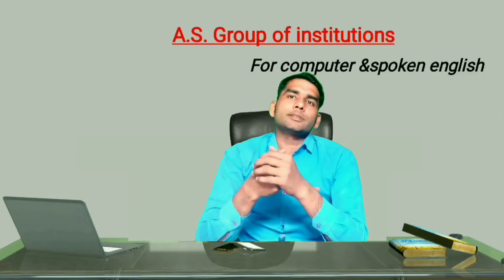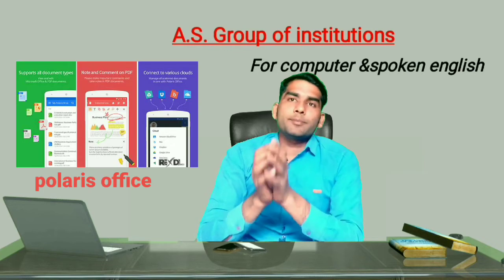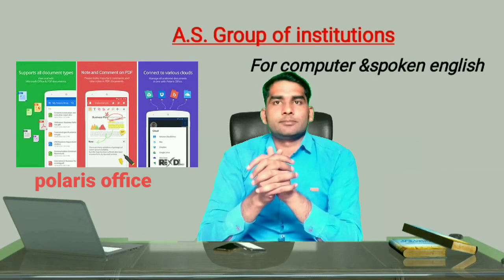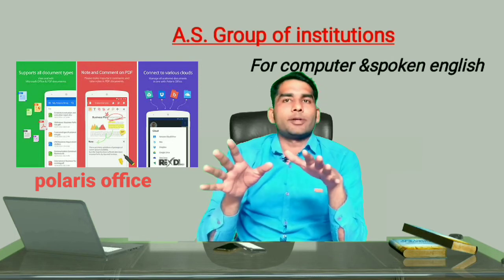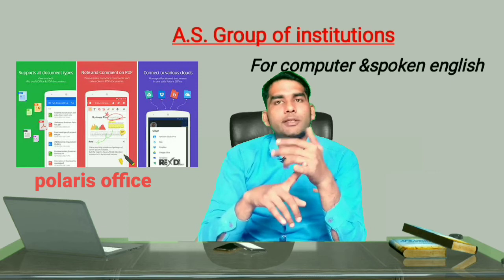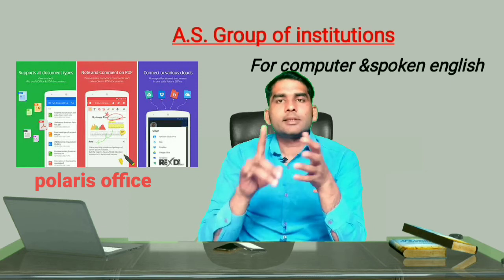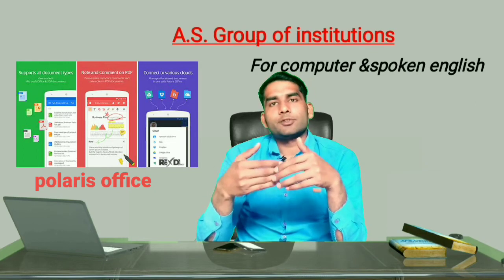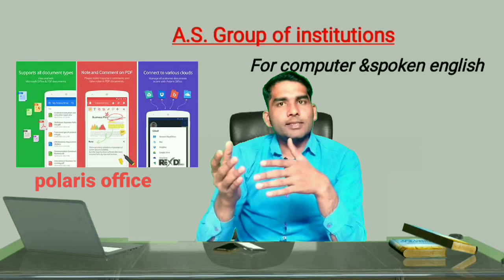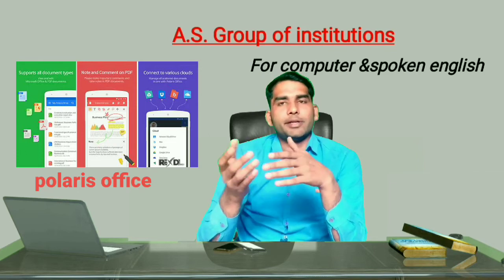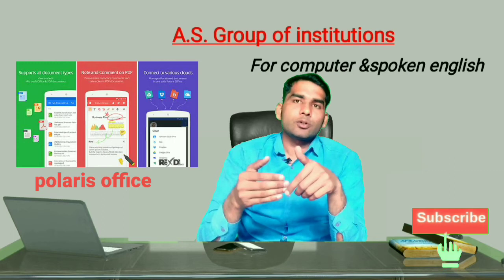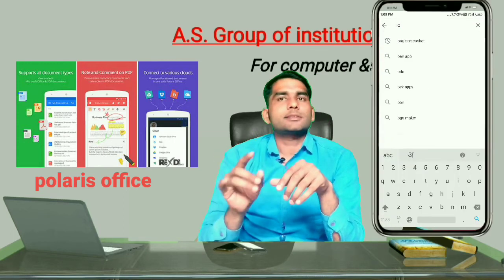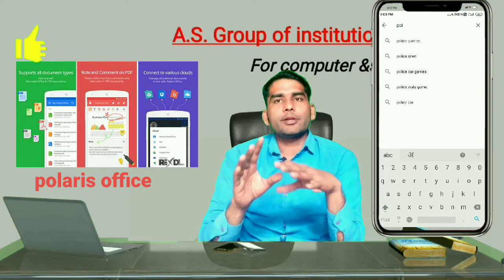At number four is Polaris Office. This is also very popular software that can be used in place of Microsoft Office. It supports multiple file formats like DOC, DOCX, XLS, XLSX, PPT, and PPTX. You can also open and edit PDF files using Polaris Office. Simply open the Play Store, type Polaris Office in the search box, and download it from the top results.